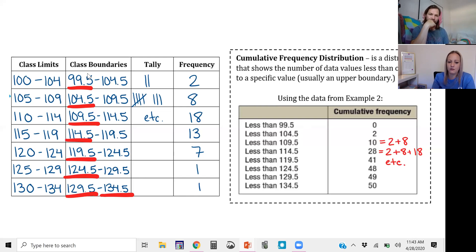Basically you're getting all of these values here from all of your lower class boundaries, but then you also do need to include the largest upper class boundary.